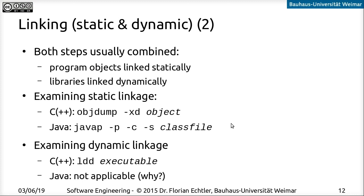For both C and Java there's a way to look at the static linkage — what objects a binary refers to. For C++ you can also inspect the dynamic linkage, meaning which libraries the executable will load. In Java this can't be done directly from the command line, since dynamic loading happens only at runtime via the system library — you would have to examine the bytecode individually to find any external libraries being loaded.